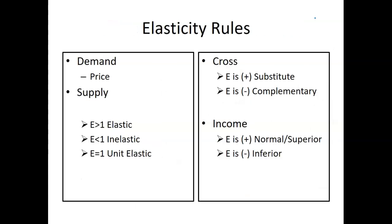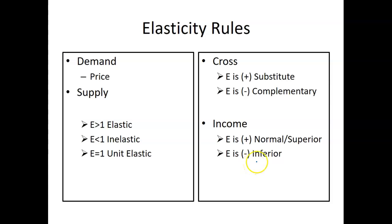Some general rules: for price elasticity of demand and supply, we use absolute values. If it's greater than one, elastic; less than one, inelastic; equal to one, unit elastic. For cross elasticity, a positive outcome means the two goods are substitutes; a negative means they're complementary. For income elasticity, a positive result is a normal good, and a negative is an inferior good.